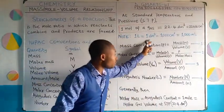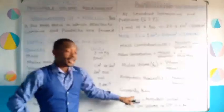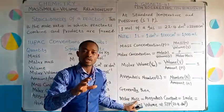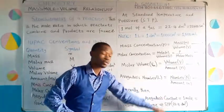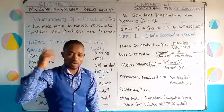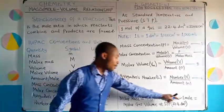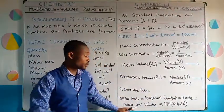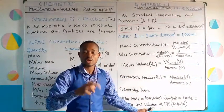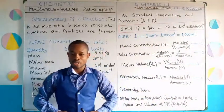In general, one mole of a substance corresponds to its molar mass and is also equal to Avogadro's constant — a relationship we encountered in previous classes. Take note that one mole for a gas is equal to the molar gas volume at standard temperature and pressure, which has the value of 22.4 dm³.